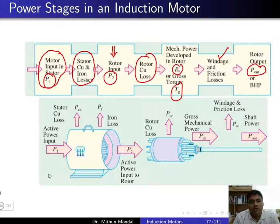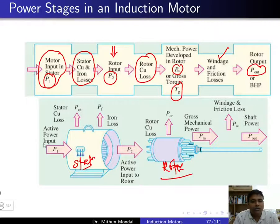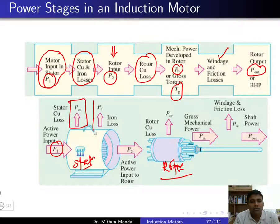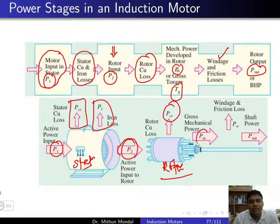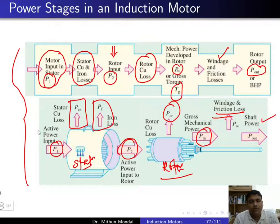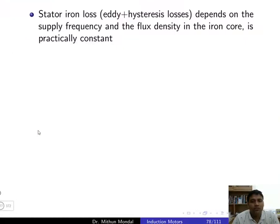Observing how power flows from input to output: this is your stator and this is your rotor. The power input P1 leads first to stator losses, giving us the rotor input P2. This rotor input then leads to rotor copper loss, and the output is the gross mechanical power Pm. Subtracting windage and friction losses gives the net shaft power output.